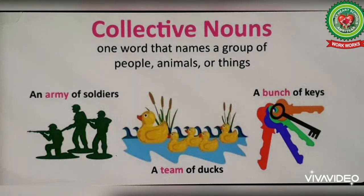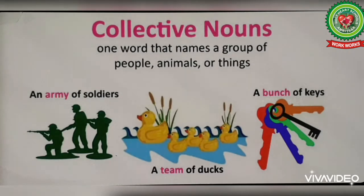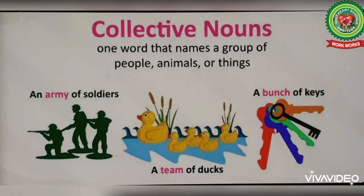Let us discuss some examples. Number one: an army of soldiers. The word army stands for the collection of soldiers, therefore army is a collective noun. Number two: a team of ducks. The word team stands for the collection of ducks, so team is a collective noun here.